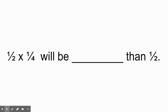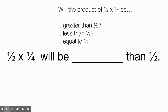This problem we're doing is a fraction times a fraction. It says: one-half times one-fourth will be blank than one-half. We need to ask ourselves the same question — will the answer of one-half times one-fourth be greater than one-half, less than one-half, or equal to one-half? The key number in this problem — on the left side we have one-half, and on the right side we have one-half. The only number shown to us just one time is one-fourth.